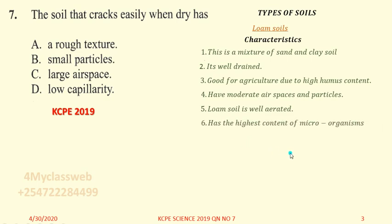Loam soil has the highest content of microorganisms. Due to the fact that it is well aerated, it can hold small animals like worms and others. Loam soil is found on top — it is the top layer of the ground.